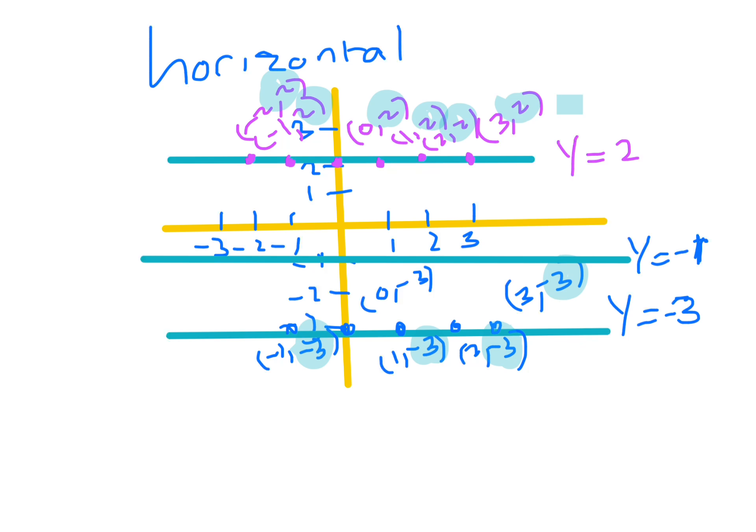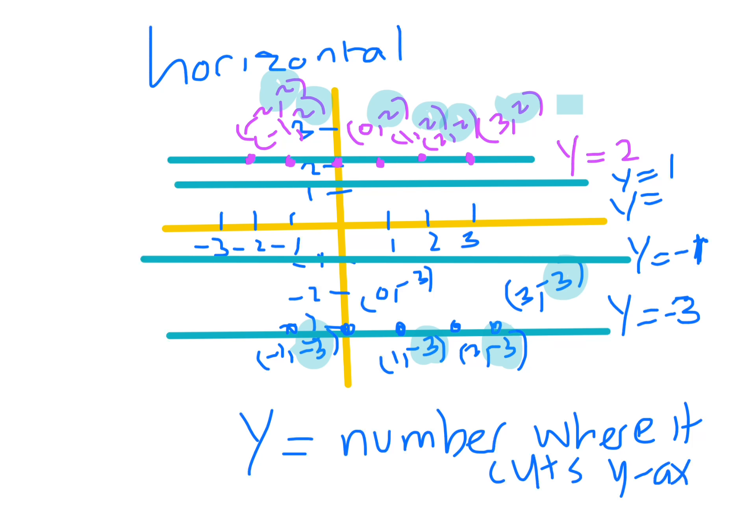If I drew one through here, this line here, that one there, it's going through one, so the equation of that line would be, what do you think? Okay, that's right, it would be one. So all horizontal lines are y equals the number, and it's the number where it cuts the y axis.